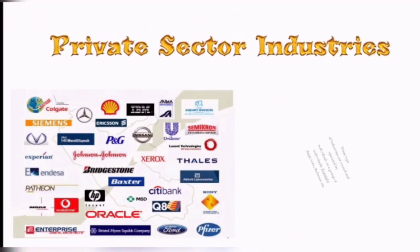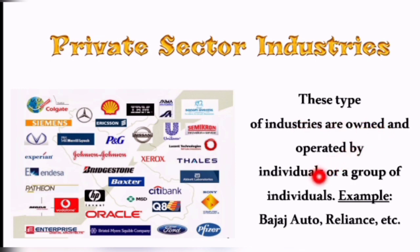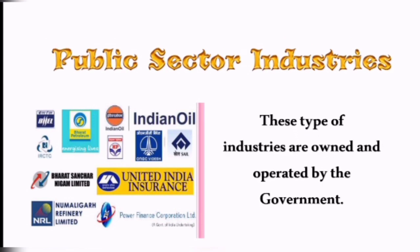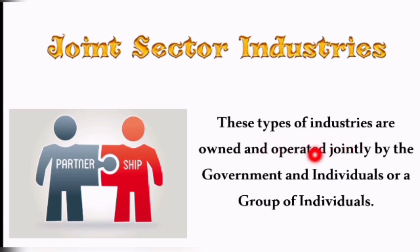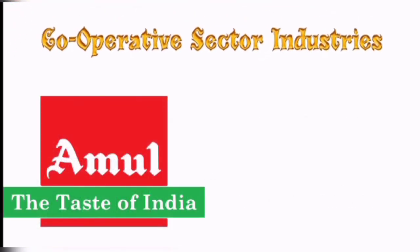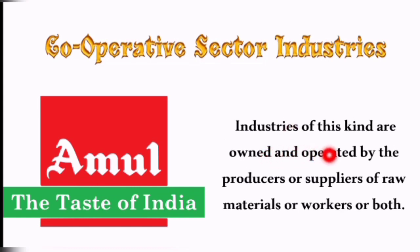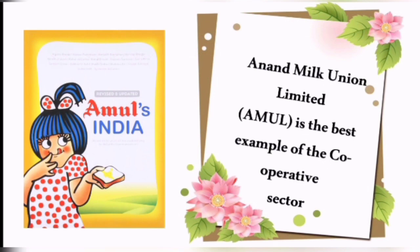Industries are classified by ownership: private sector industries are owned by individuals or groups, e.g., Bajaj Auto and Reliance; public sector industries are owned and operated by the government; joint sector industries are jointly owned by government and private individuals; and cooperative sector industries are owned by producers or suppliers of raw materials, e.g., Amul (Anand Milk Union Limited).